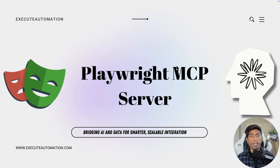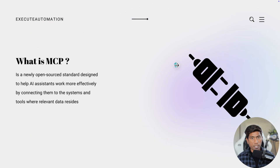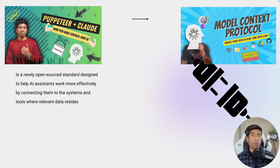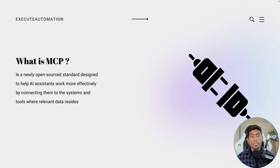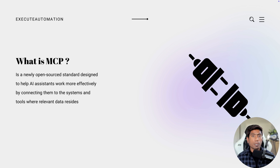That's what we're going to see in this video — how I built everything from scratch. If you haven't heard about MCP before, it stands for Model Context Protocol, which is an open source standard designed to help AI assistants work more effectively by connecting them to systems and tools where relevant data resides. In this case, because we're talking about browser automation, the local browser is the context we're giving to the AI model.